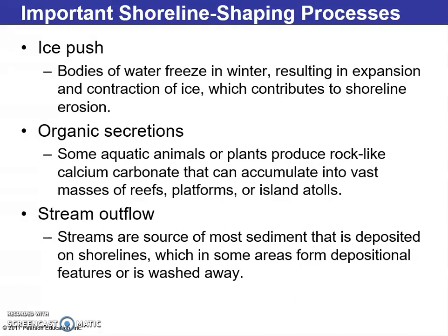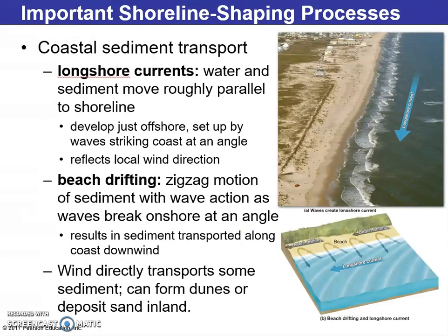Ice push occurs as water freezes, resulting in expansion and contraction of ice. As for organic secretions as a shoreline shaping process, some aquatic animals and plants produce rock-like calcium carbonate, accumulating into vast, massive reefs — like the Great Barrier Reef on the northeast side of Australia, which is the largest reef in the world.